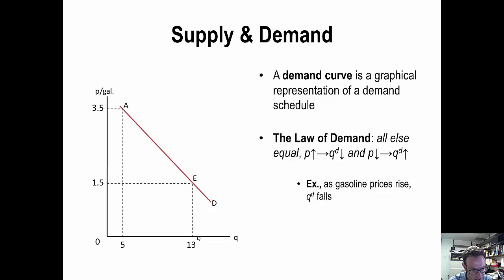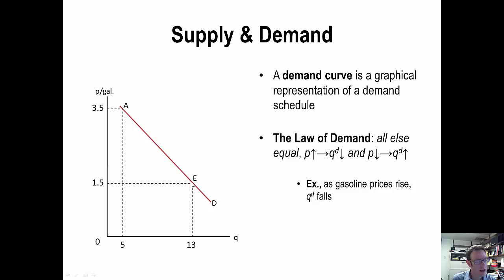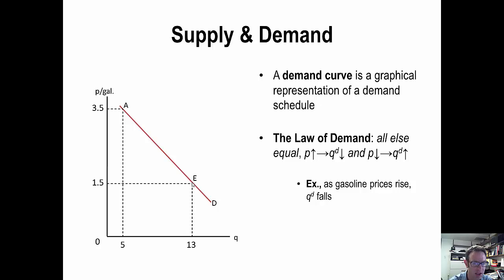Taking the other perspective — the vertical one — yields the reservation price. The maximum willingness to pay for the 5th gallon of gasoline is $3.50, and for the 13th gallon it is $1.50. Notice that the height of the demand curve using this vertical interpretation tells us the reservation price for that Qth unit — the maximum price the market is willing to pay.